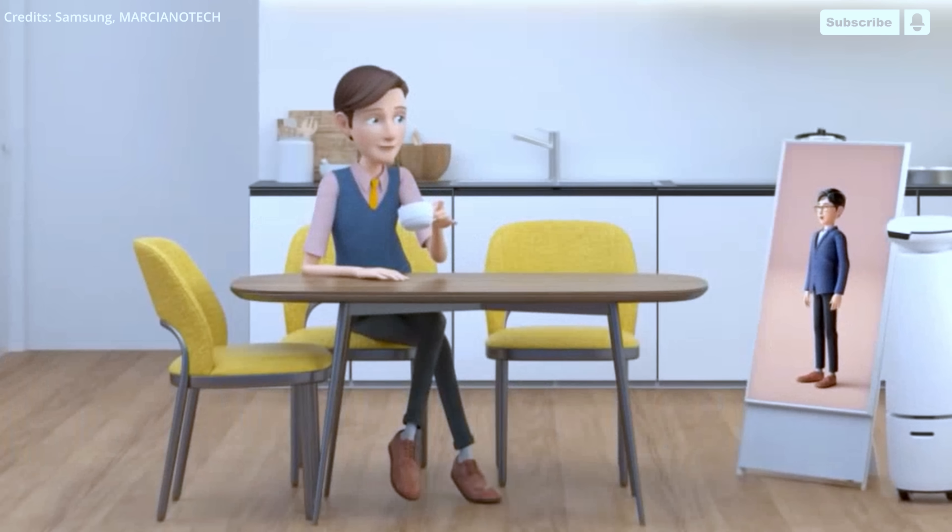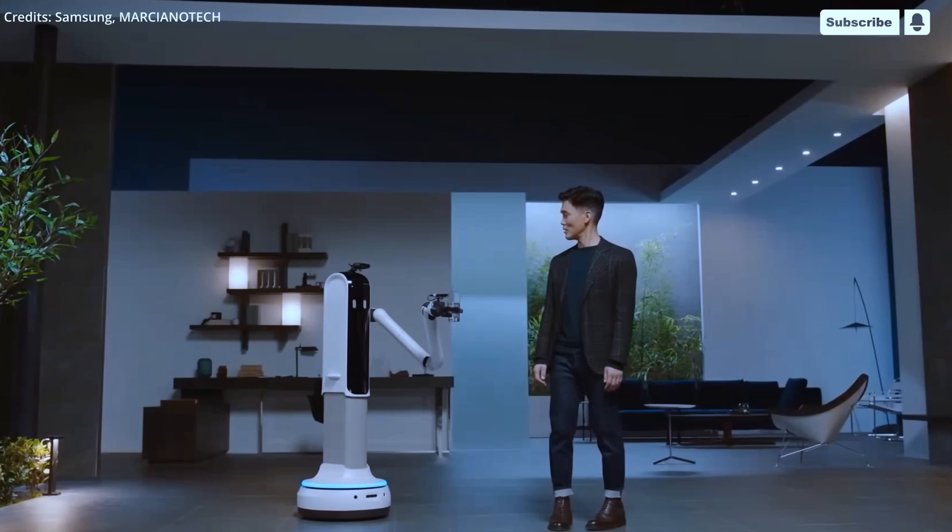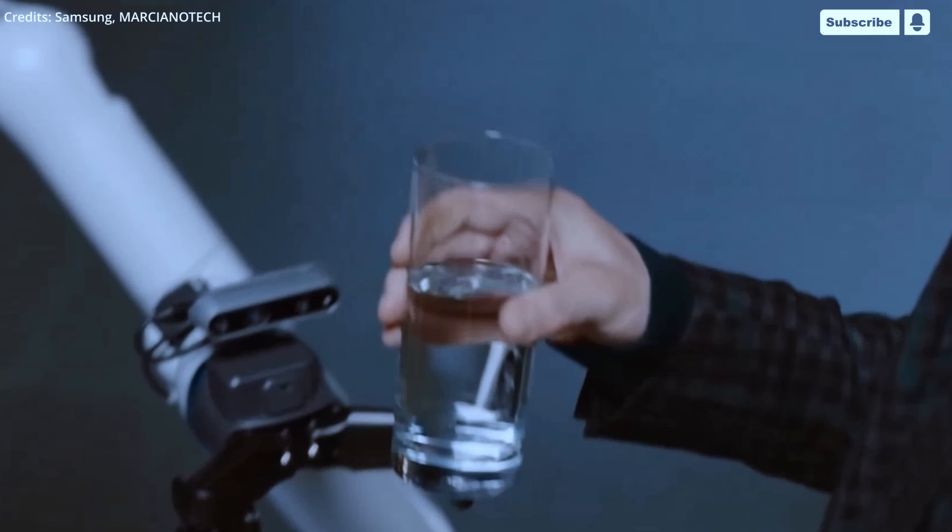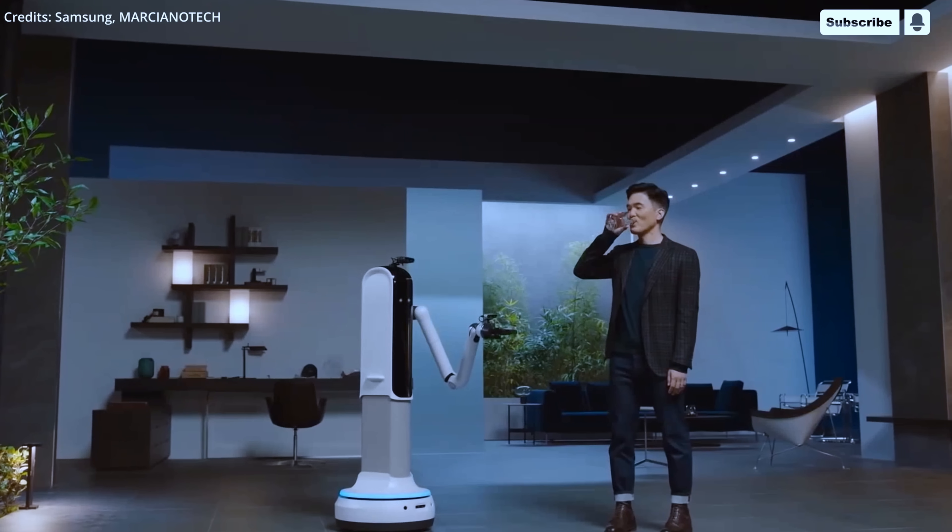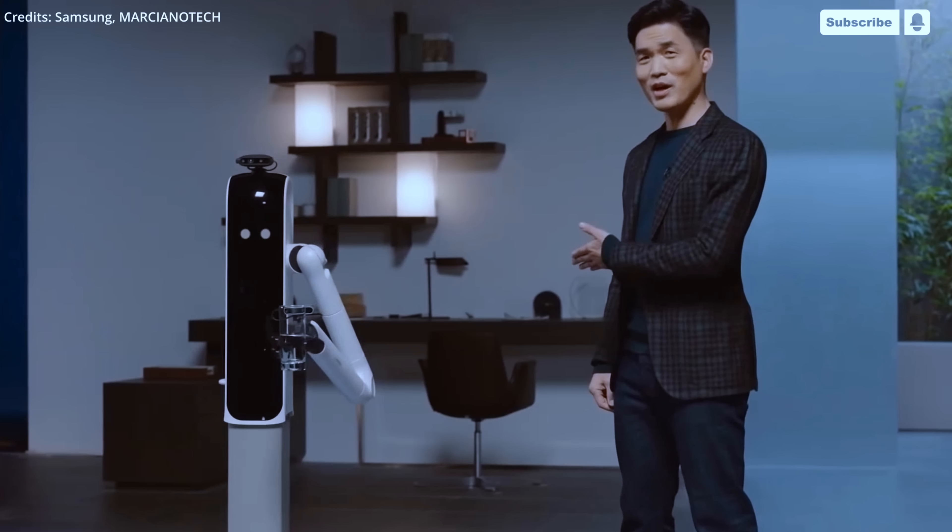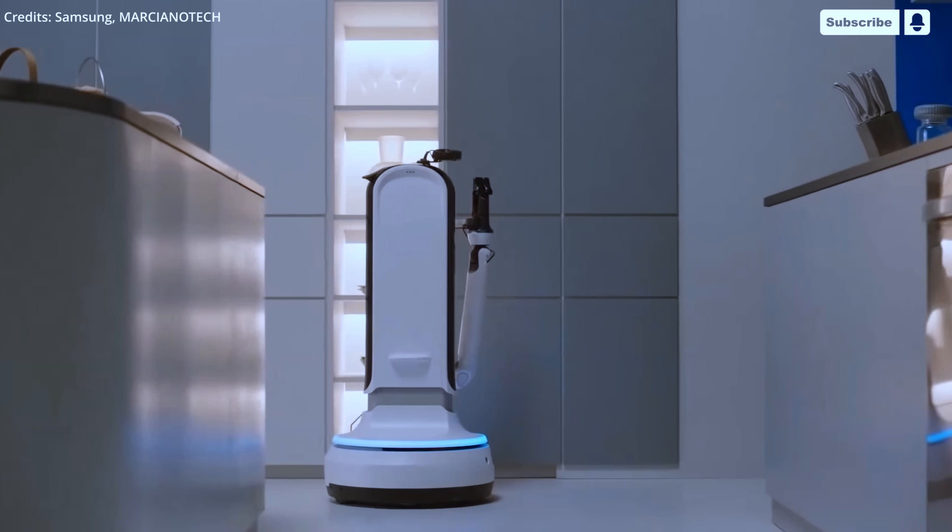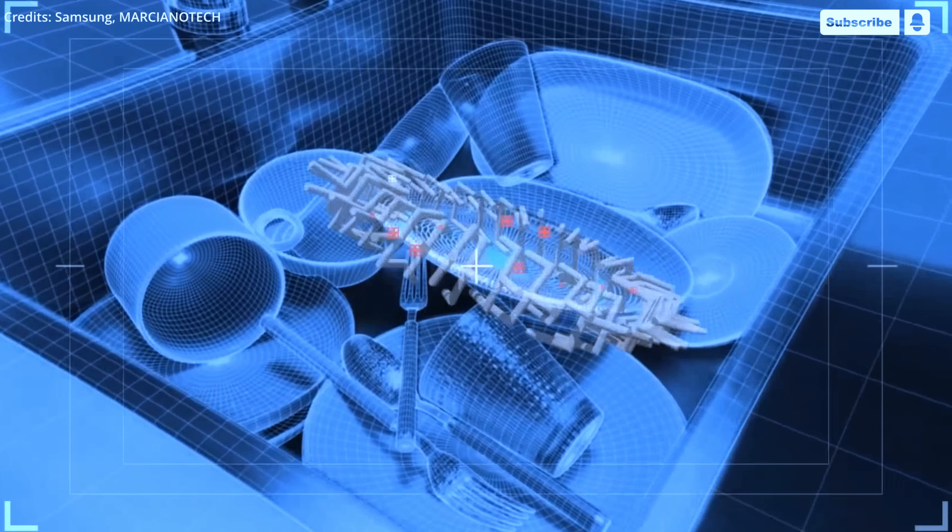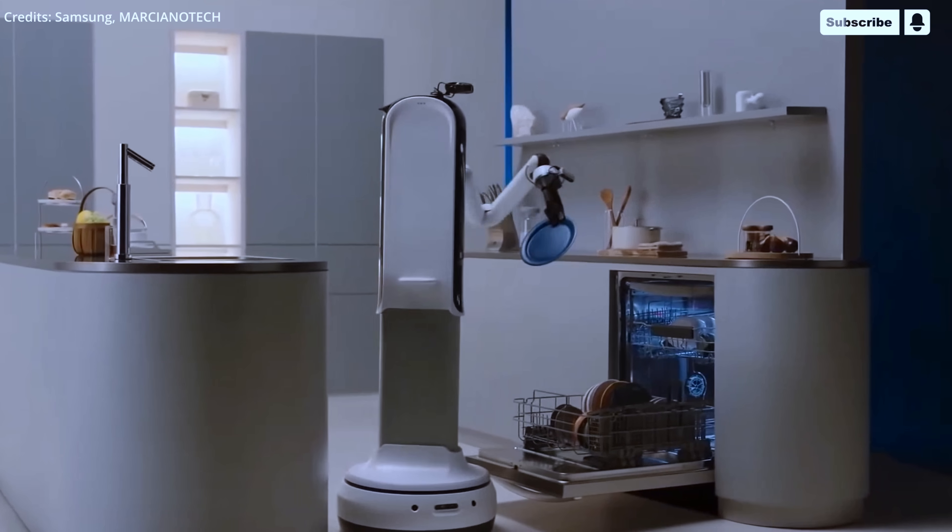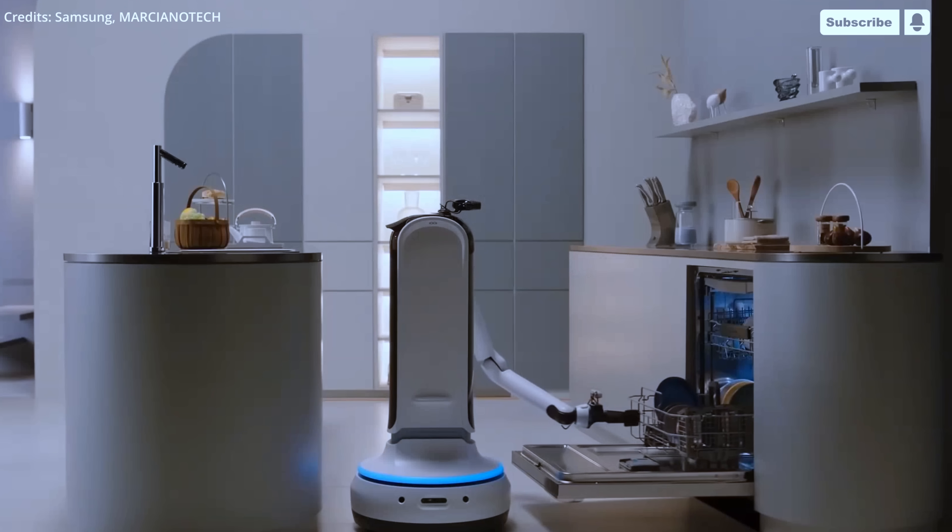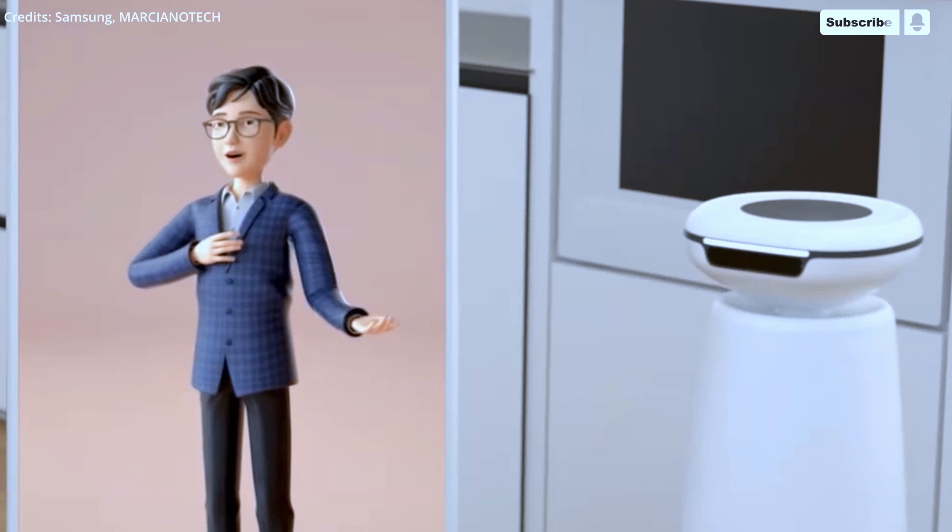Samsung had introduced a new AI powered scenario called tableware handling, which allowed the Samsung Bot Handy to pick up multiple objects and analyze the surrounding environment after recognizing them. With this advanced technology, the robot was equipped with three key features to make it a useful tool for household tasks.